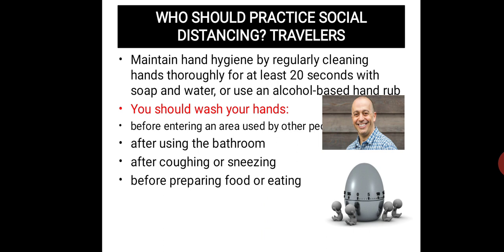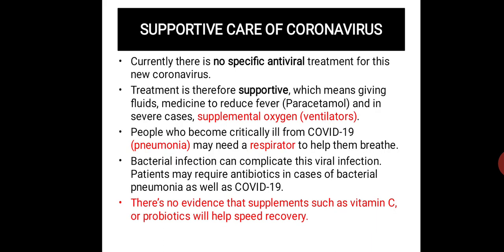Those who should practice social distancing include travelers and people who are already infected or at high susceptibility. Maintain hand hygiene by washing hands for at least 20 seconds with soap and water, or use an alcohol-based hand rub — before entering shared areas, after using the bathroom, after coughing or sneezing, and before preparing food. An egg timer can be used as a reminder to wash hands every 30 minutes.